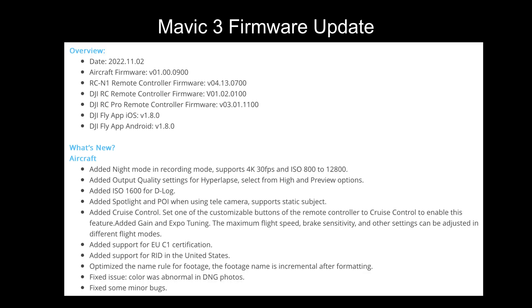The Mavic 3 aircraft firmware is now version 01.00.0900. The release notes show it adds a new night mode in recording mode, output quality settings for hyperlapse, spotlight and point of interest when using the tele camera, cruise control, and gain and expo tuning — where maximum flight speed, brake sensitivity and other settings can be adjusted across different flight modes. It also adds EU C1 certification, support for Remote ID in the United States, optimized naming rules for footage, fixes for abnormal color in DNG photos, and other minor bug fixes.